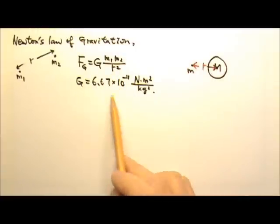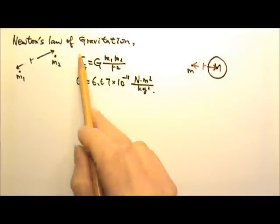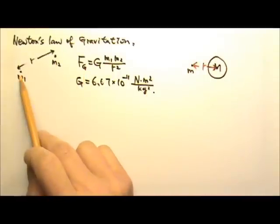The gravitational force between the two will be big G M1 times M2 over r squared. The big G is a very small number. That's why the gravitational force between two normal objects is very weak and we usually just ignore it.